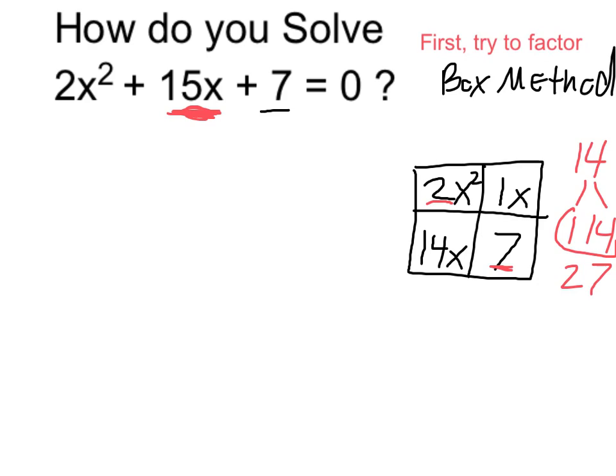Factoring the first row, I have 2x squared and a single x. The only thing that those have in common is a single x. In the bottom row, between 14x and 7, they have in common 7.